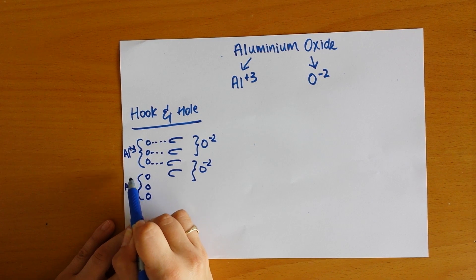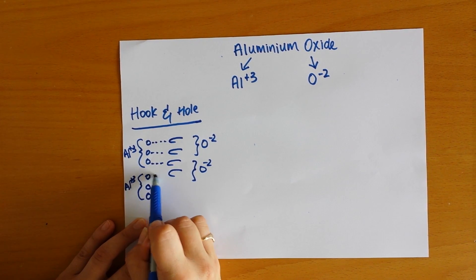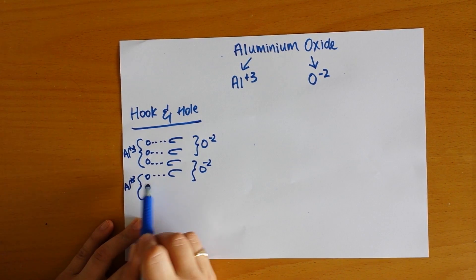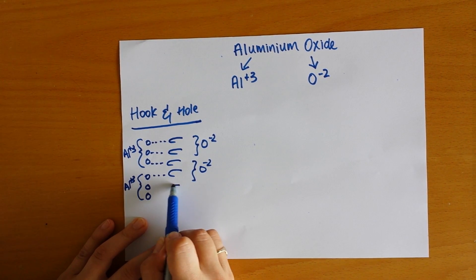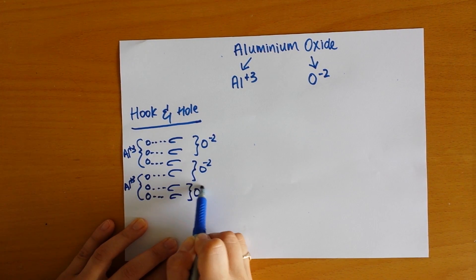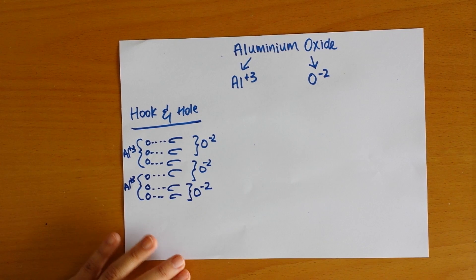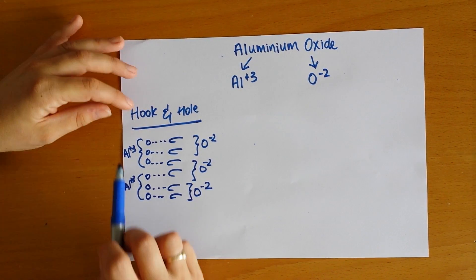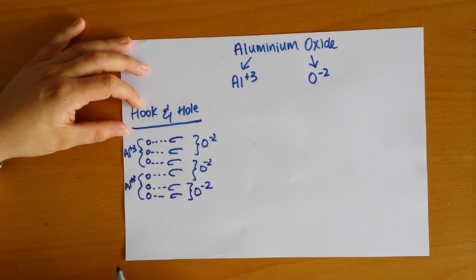So now we can pair up that last hook of the oxide, but we've still got two holes missing in the aluminum. So if we add in another hook, we can see here that we now have all the hook and holes have pairs.